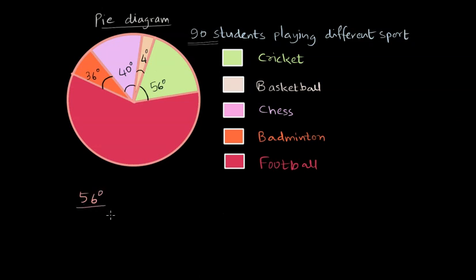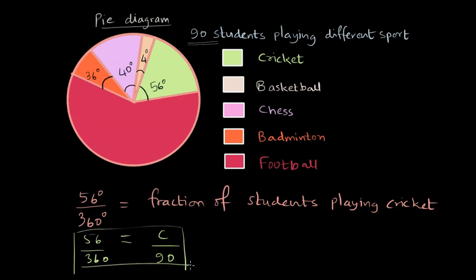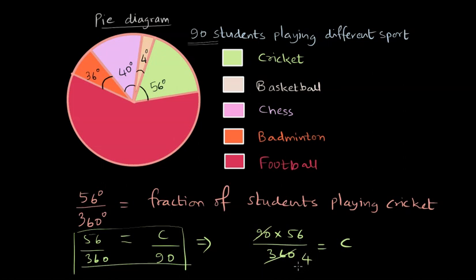So the fraction of students playing cricket out of 90 students is 56 degrees divided by 360 degrees. This fraction equals the number of students playing cricket — call it C — divided by 90, since the total number of students is 90. The equation is 56/360 = C/90. Multiplying both sides by 90, we get C = 90 × 56 / 360. Since 360 is 4 times 90, we divide 56 by 4 to get 14.